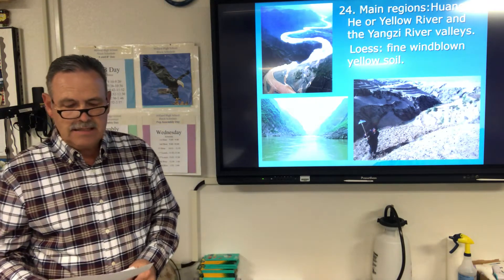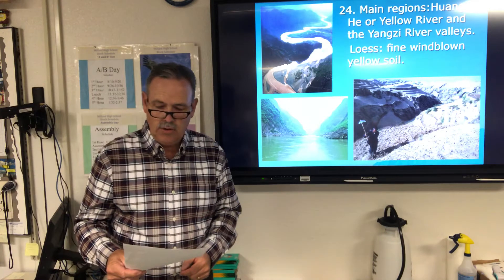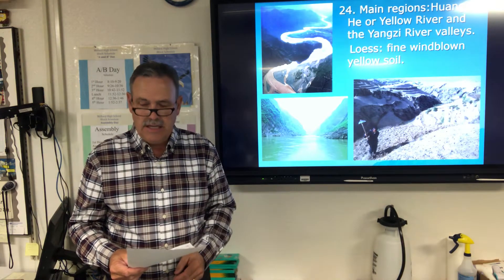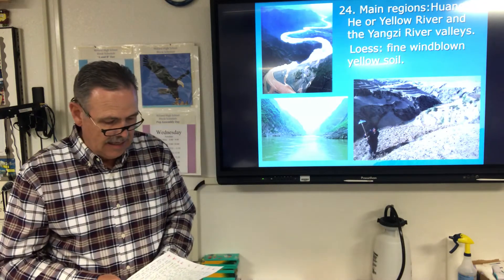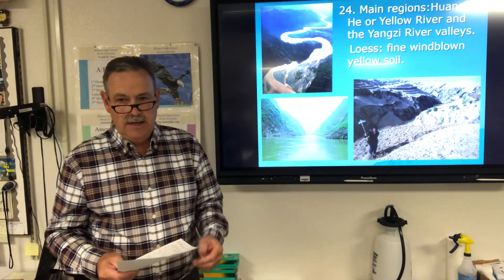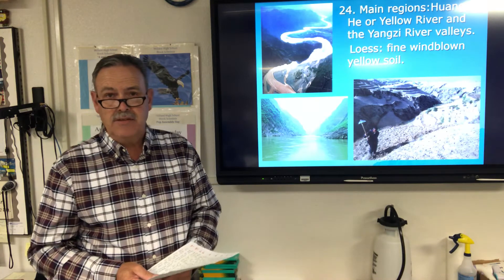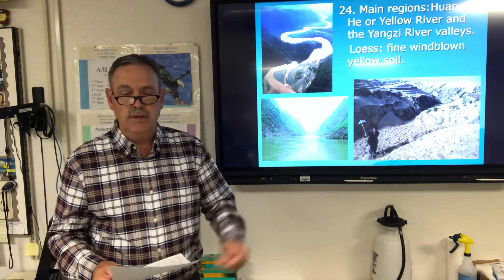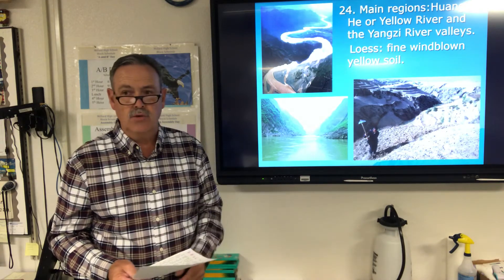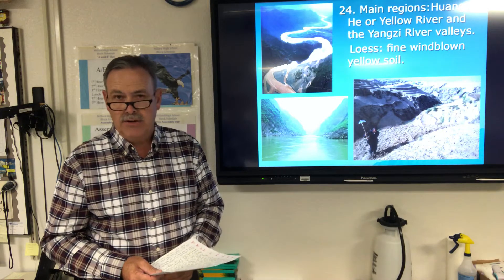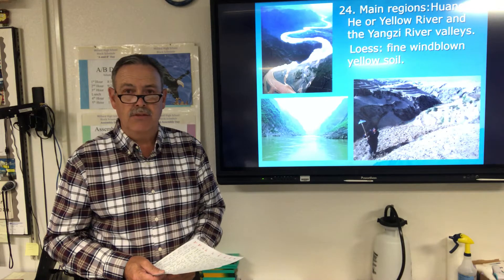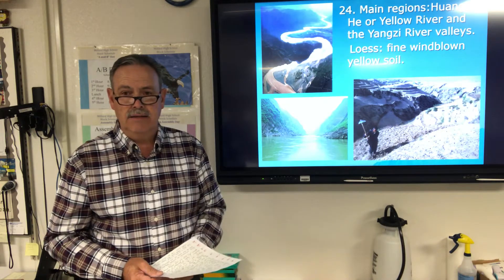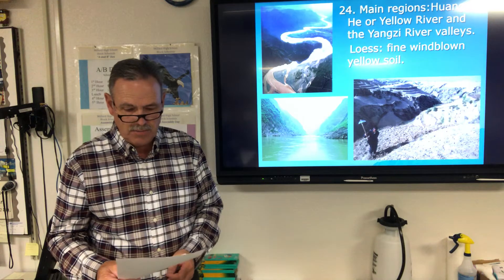Loess is a fine, wind-blown yellow soil. These rivers provided irrigation and transportation routes, and the Yellow River is named for that yellow soil. As the wind blew and deposited this soil on the ground, it helped enrich the farmland and allowed them to continue growing crops.